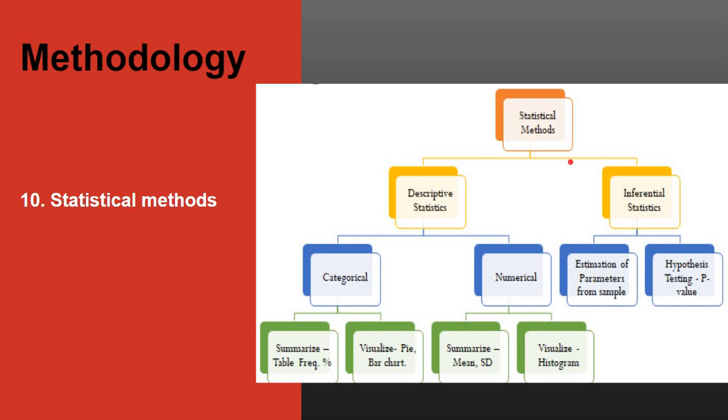The last on this list is the statistical plan for research. For any research, you have descriptive statistics and inferential statistics. In descriptive statistics, we describe the variables based on the type. Categorical variables are summarized using tables with frequencies and percentage and visualized using pie charts or bar charts. Numerical variables are summarized using mean and standard deviation and visualized using histograms. In inferential statistics, if your study objective is estimation of parameters from the sample, we use confidence intervals to estimate the true values in the study population. If your objective is to look for association between two factors, we test the hypothesis by applying statistical test and calculate p-value. If the p-value is less than 0.05, we call the test results statistically significant.